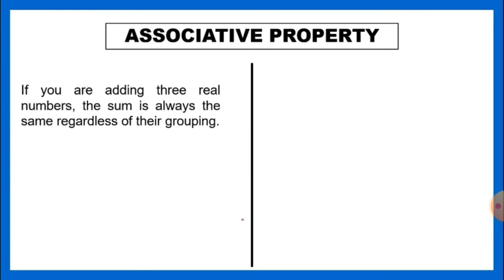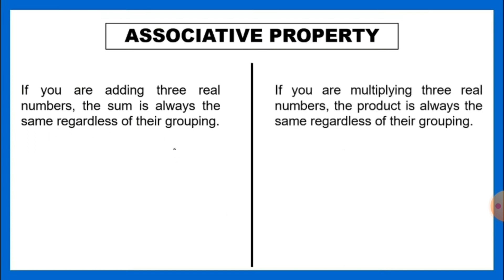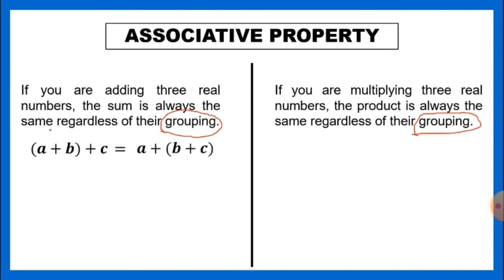Next property: associative property, with two operations — addition and multiplication. For addition, if you are adding three real numbers or integers, the sum is always the same regardless of their grouping. The pattern is: the quantity (a plus b) plus c equals a plus the quantity (b plus c). Changing the groupings will not affect or change the answer.